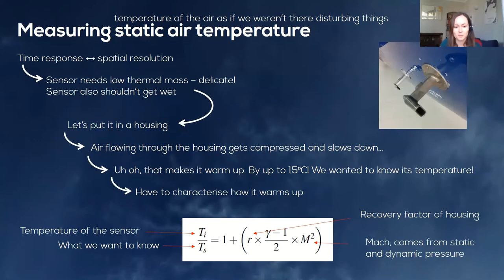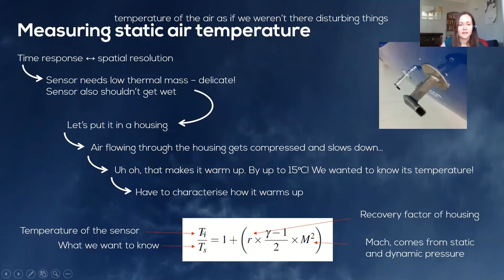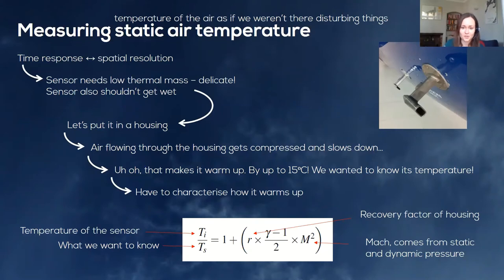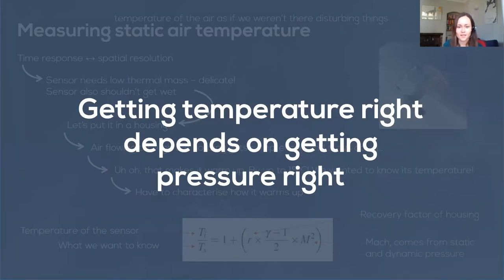To find a way around this warming effect we characterise how it warms up. The temperature we measure at the sensing element, T_i, is related to the static air temperature T_s by the recovery factor — which is more or less the degree to which the air is slowed down in the housing — and the Mach number, which comes from the static and dynamic pressure measurements. Getting the temperature right on the aircraft therefore depends on having a really good measure of pressure, which is why it's important to put a lot of work into getting that pressure measurement right.